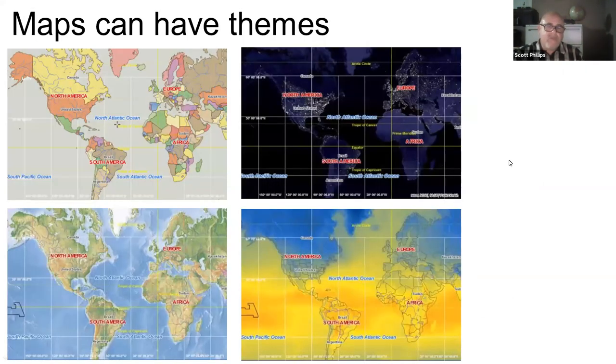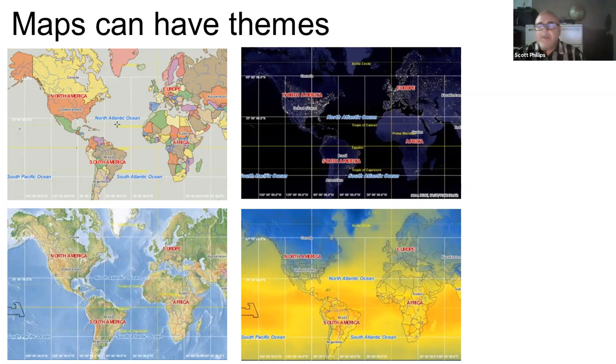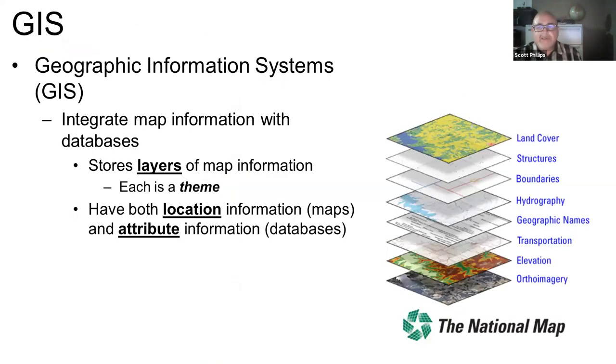All right, so maps have themes. And with the computerized environment, we can really unlock our potential to put more than one theme together at a time, to put multiple themes of information and be able to study and use those at once. That gets us into the realm of what's called GIS or Geographic Information Systems. What these do is they integrate map information in a digital environment with database records.